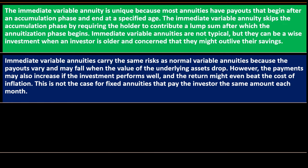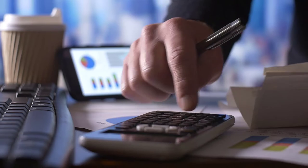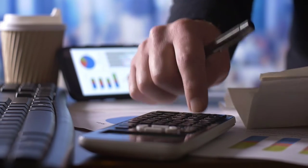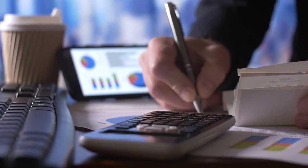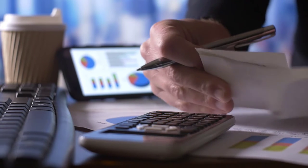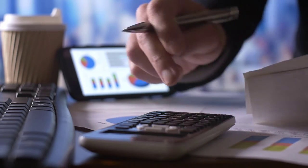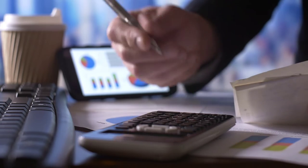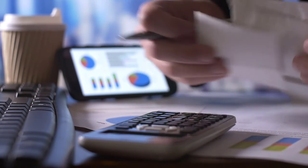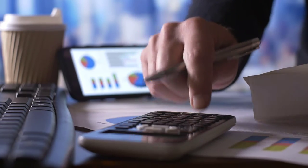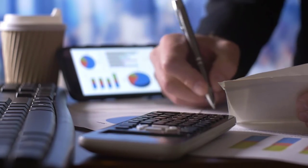This is not the case for fixed annuities, which pay the investor the same amount each month. With a fixed annuity, as the name suggests, everything is locked in and known up front — you're taking on less risk, which is good, but you're not getting exposure to the higher ends. Risk and reward typically go in the same direction: more risk brings the potential for more reward.